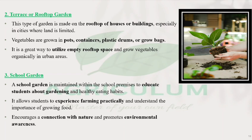Next is school garden. The school garden's main purpose is that children and students will be educated about gardening and healthy eating habits. It is located on the premises of the school. It allows students to get practical exposure to farming and understand the importance of growing food. It also encourages connection with nature and promotes environmental awareness among students.